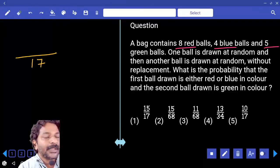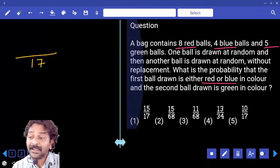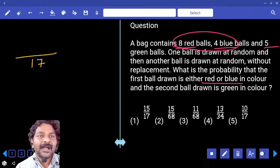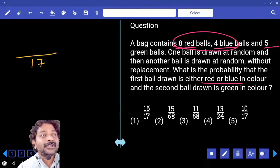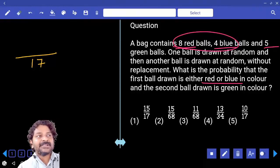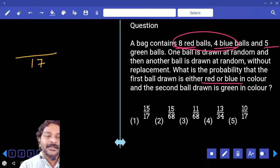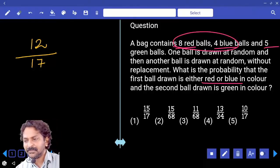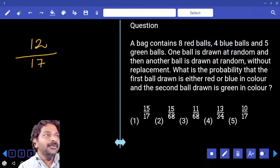And that ball should be either red or blue. Red or blue, that means out of eight red and four blue, total 12 balls we have. Out of these 12 balls we may pick any ball, right? That can be done in 12C1 ways. That means red or blue, correct?